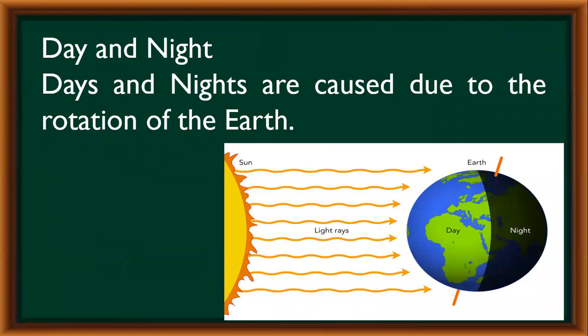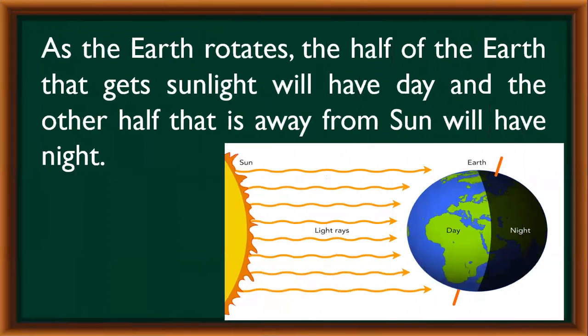Day and night. Days and nights are caused due to the rotation of the earth. As the earth rotates, the half of the earth that gets sunlight will have day, and the other half that is away from the sun will have night.